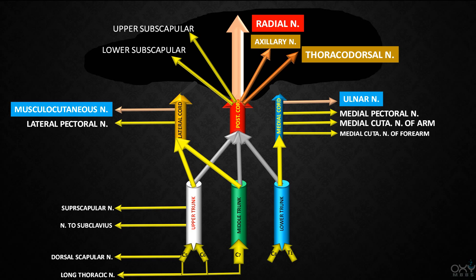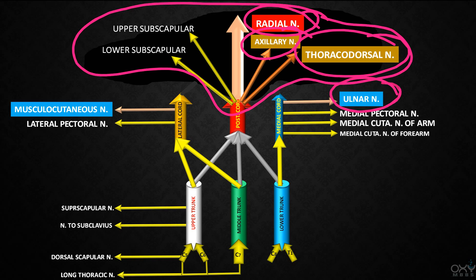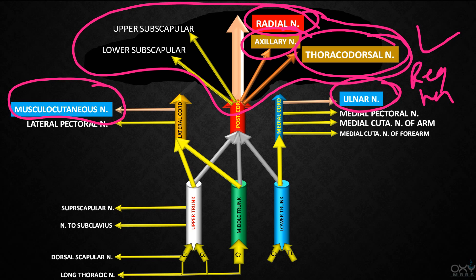This is all for today. In the next video we will see how to remember that all these nerves are branches from the posterior cord, and how to remember the root values of the radial nerve, axillary nerve, thoracodorsal nerve, ulnar nerve, and musculocutaneous nerve — these are very important for regular MBBS students as well as PG aspirants.